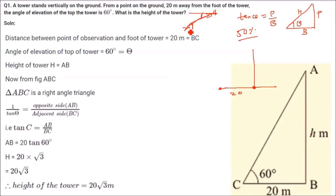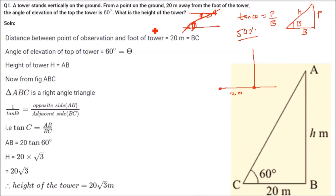This angle and this angle, because these two are parallel lines, will be equal because of the alternate angles between the parallel lines of a transversal. So even if the depression is given, we will take this angle. Even if the elevation is given, we will take this angle. The angle of elevation here of the top of the tower is 60 degrees.